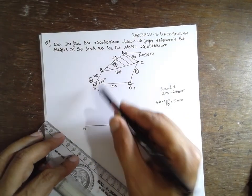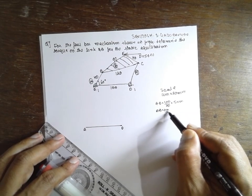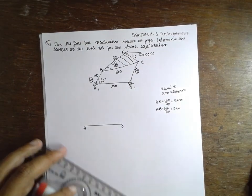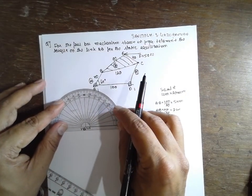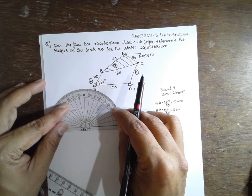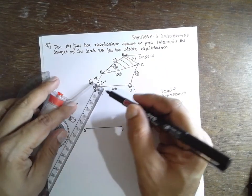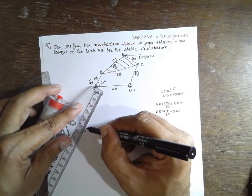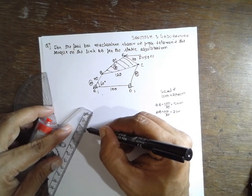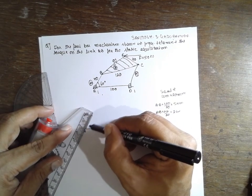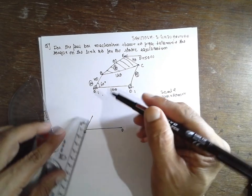Next, AB is 40, 40 divided by 20 is nothing but 2 cm, angle 60 degree. This is B.